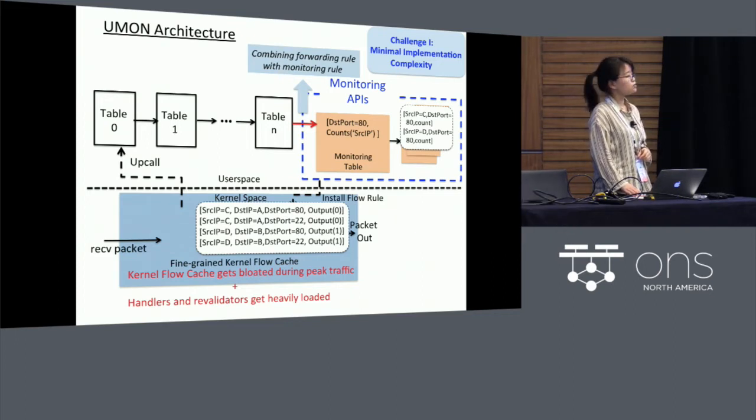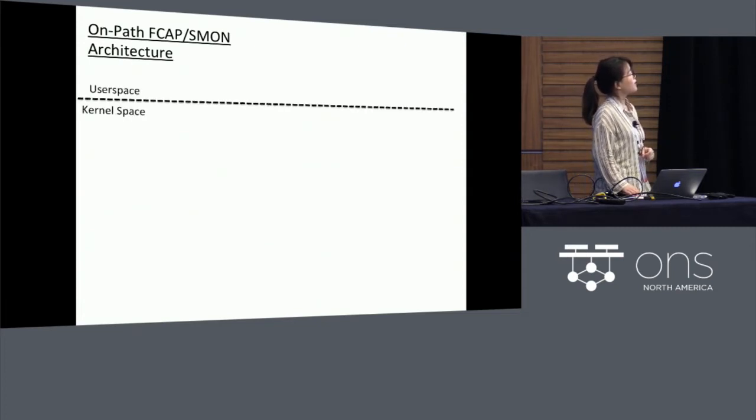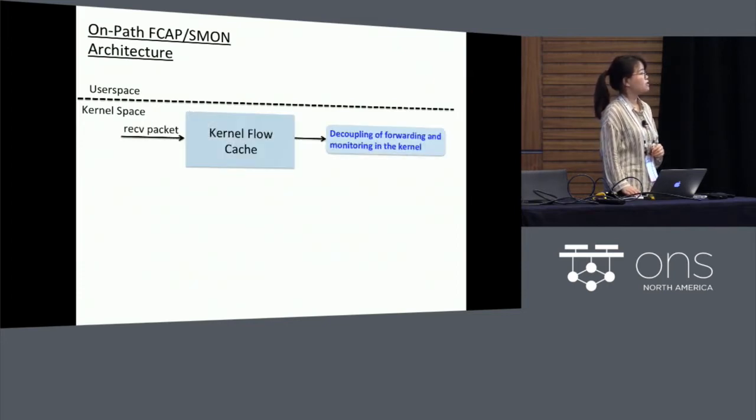So to address these issues in our work, we first propose two on-path designs, the on-path FCAP and on-path SMON. In the user space, the monitoring module as well as the programmable interfaces exposed to the upper-layer monitoring applications have similar designs as UMON. However, in the kernel space, we propose to decouple the monitoring from forwarding by introducing a separate filtering table, which maintains the filtering rules used to classify the incoming packets based on the user-defined monitoring tasks.